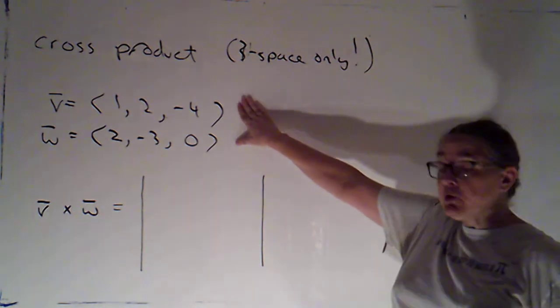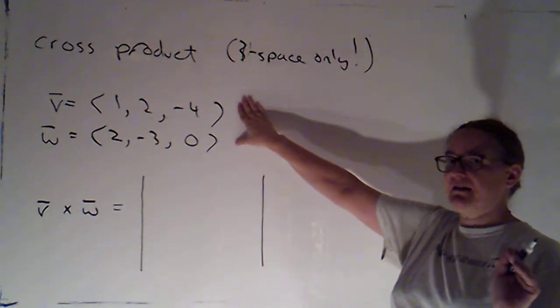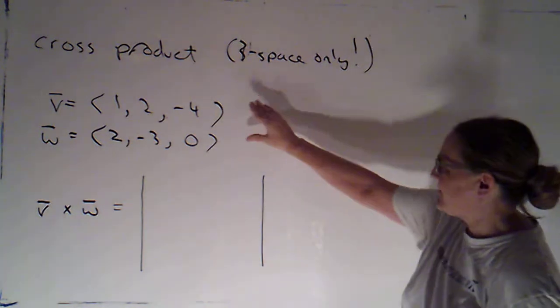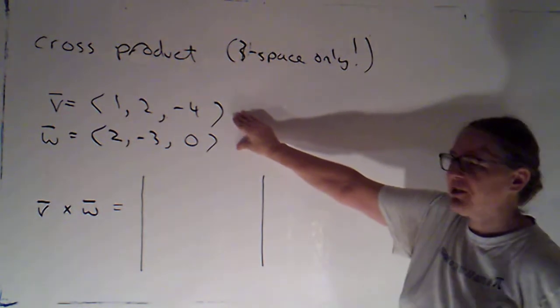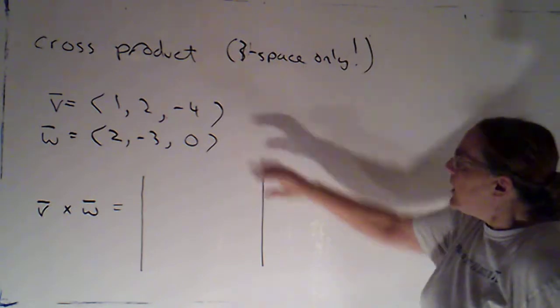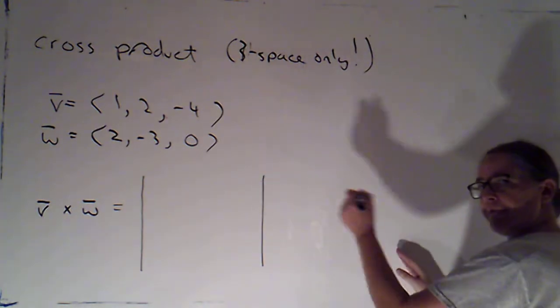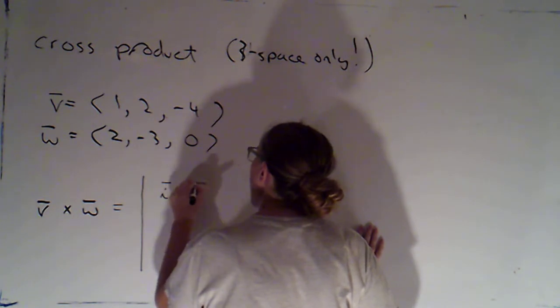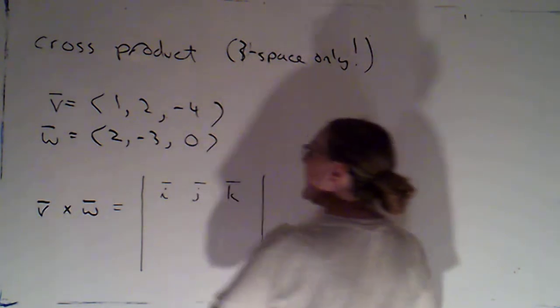I can define the cross product, which I will write as v crossed with w, as it's going to be a symbolic determinant. Now, you'll notice I only have two vectors in three space. So I can't form a square matrix out of them. Well, what I'm going to do is for my first row, I'm going to put my unit vectors i, j, and k.